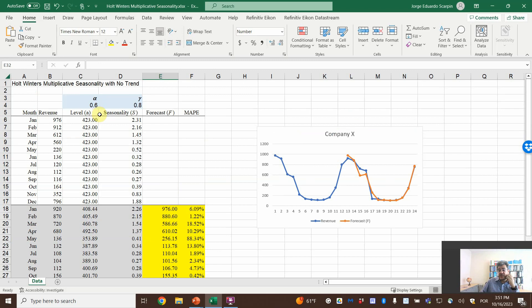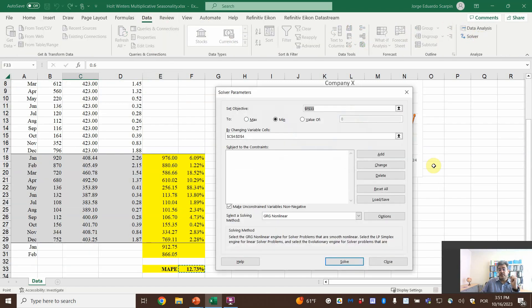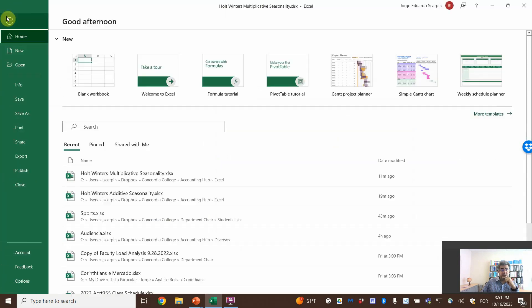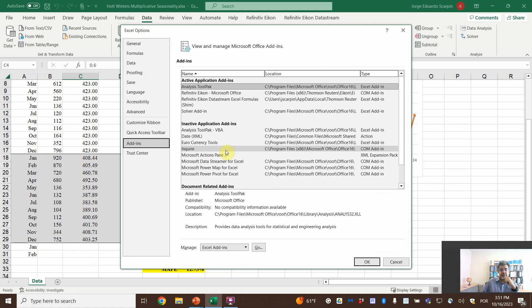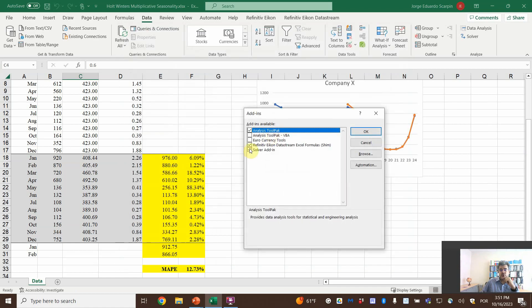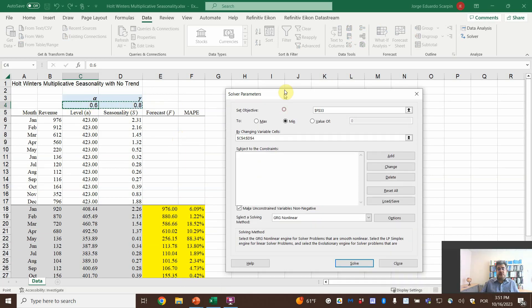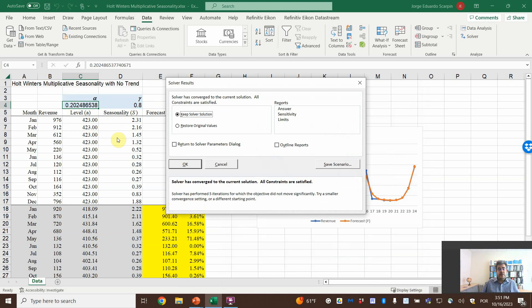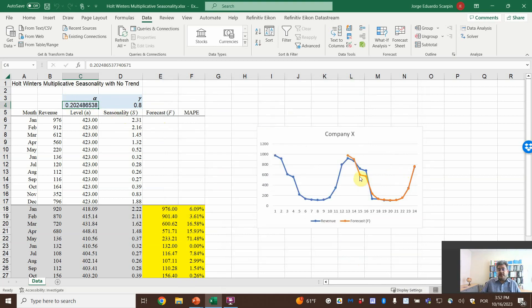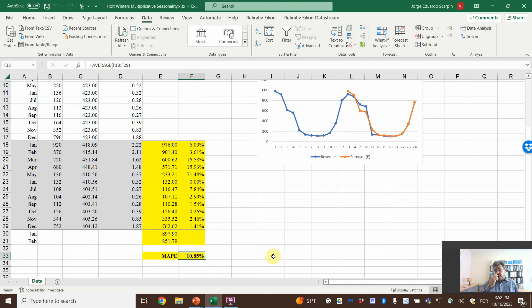We tested with 0.6 and 0.7, or 0.6 and 0.8. Let's see if we can optimize these numbers using Solver. If you don't have Solver in Excel, just go to File, Options, Add-ins, Excel Add-ins, and select Solver Add-in. Let me reset here. We want to minimize the MAPE, the mean average percentage error, by changing these two cells. Let's solve it. So 0.2 for alpha and epsilon remains 0.8. The error moves from 12 to 10 percent.